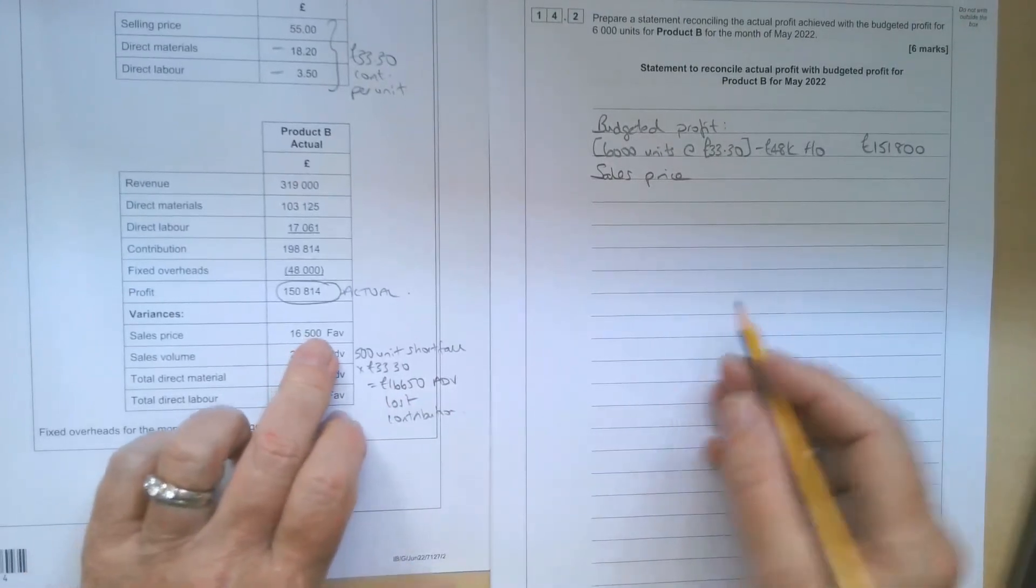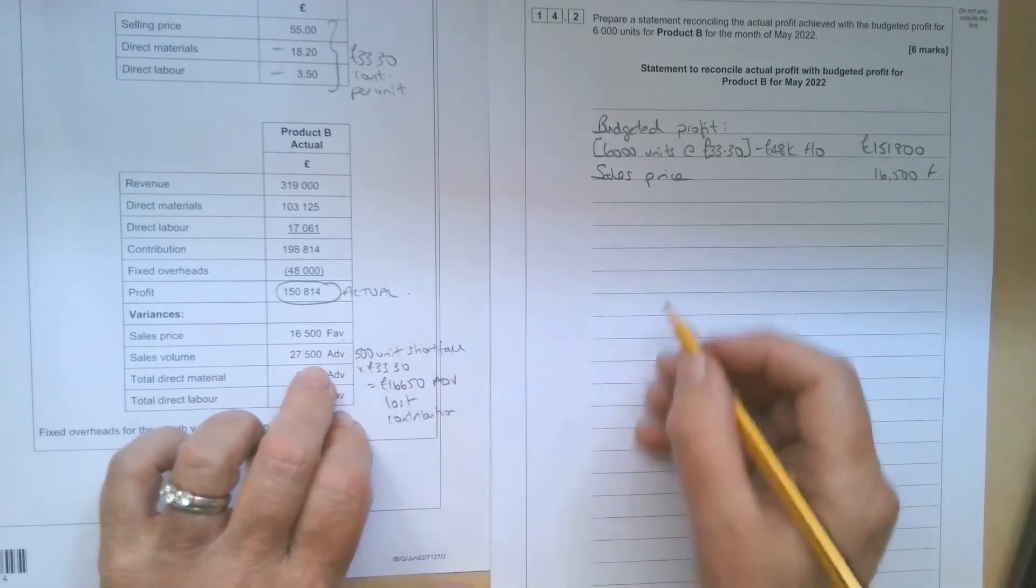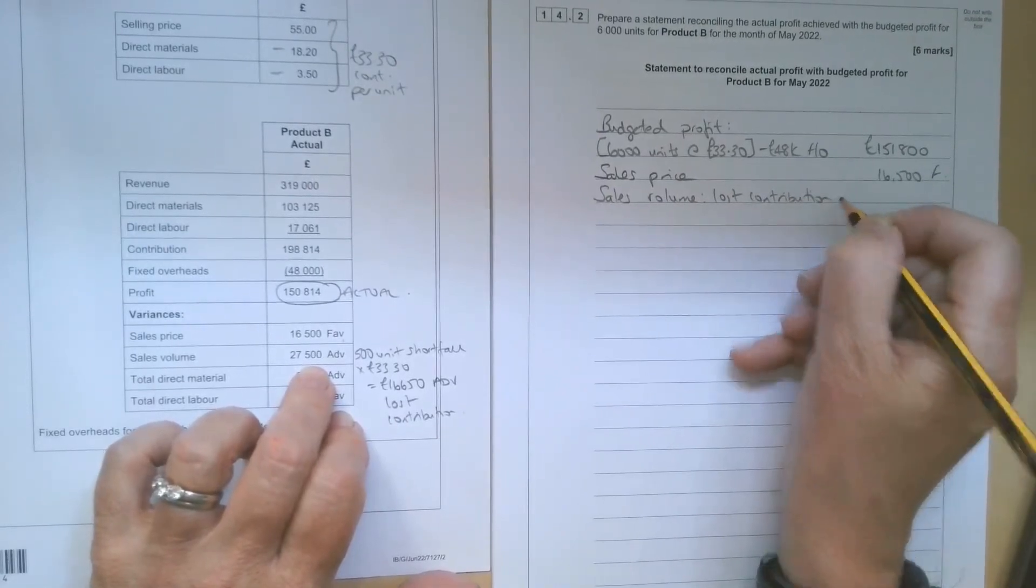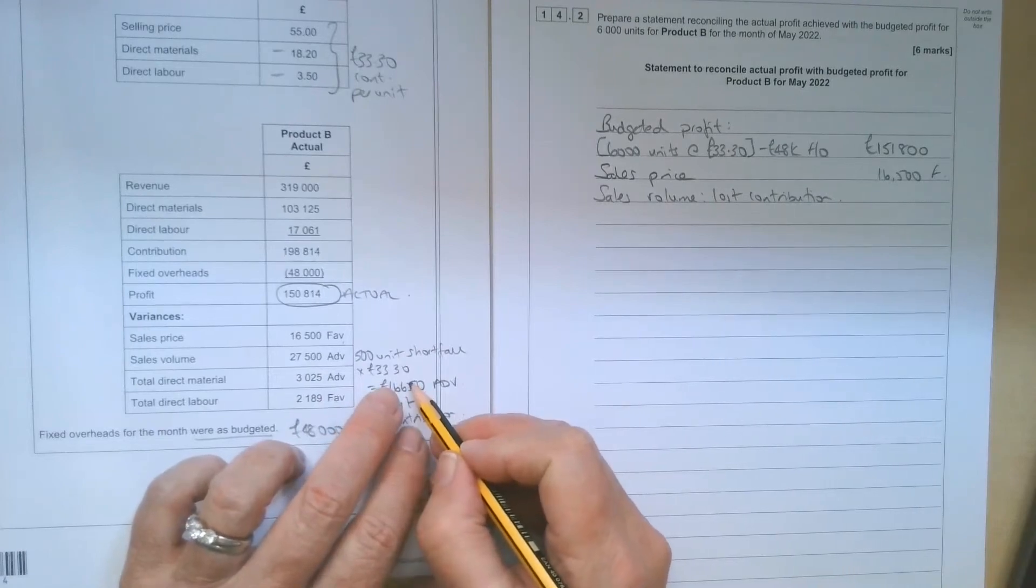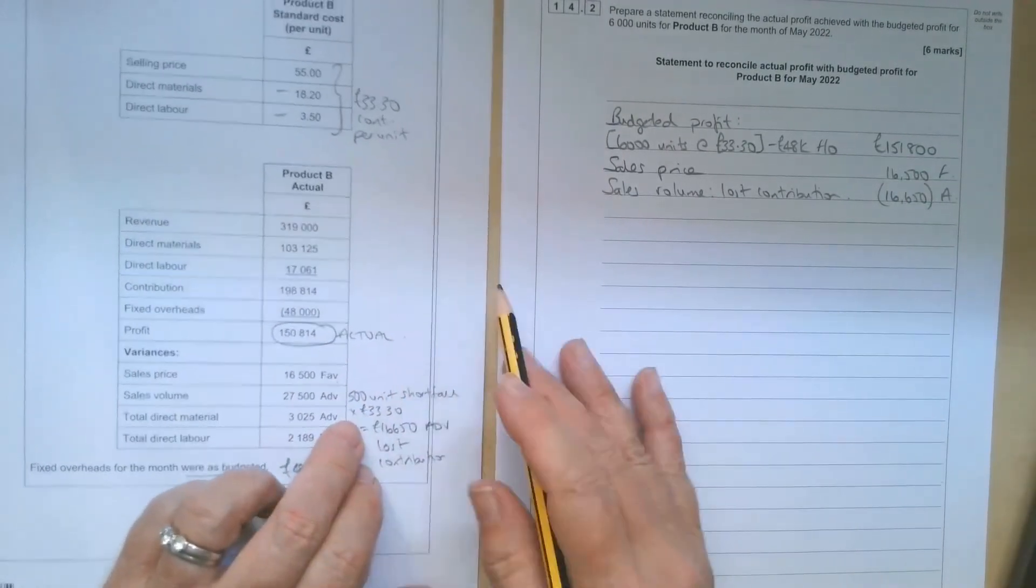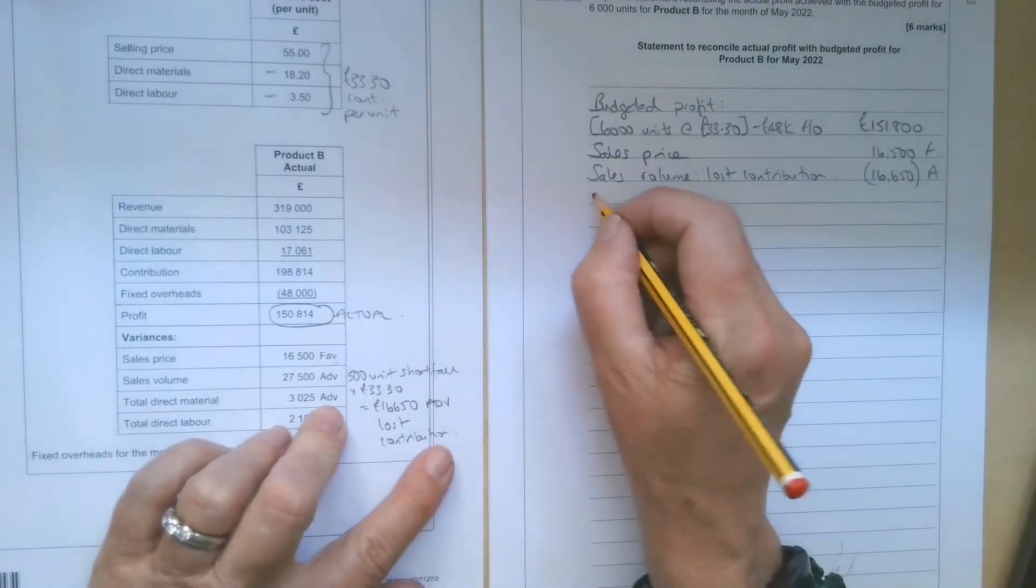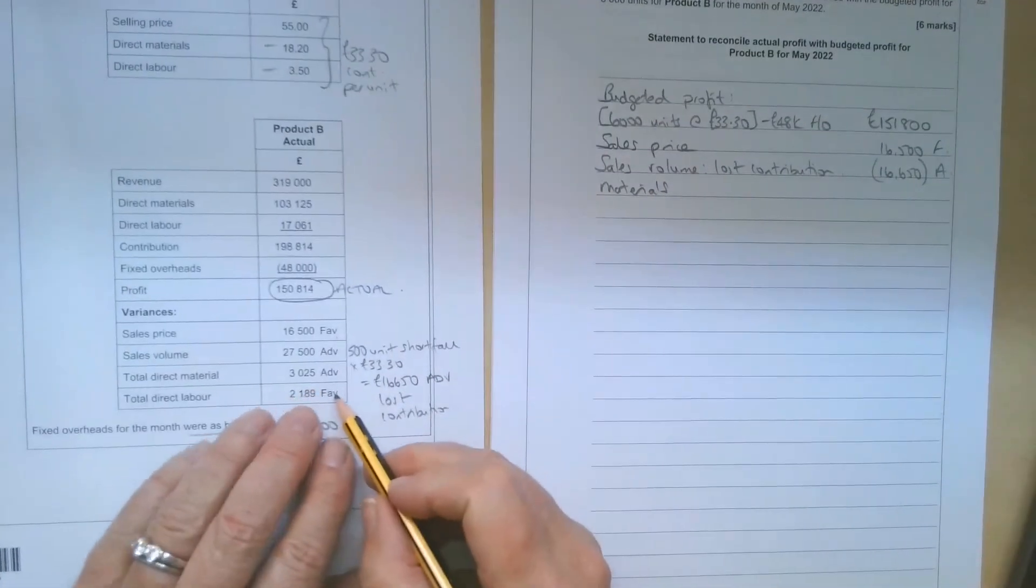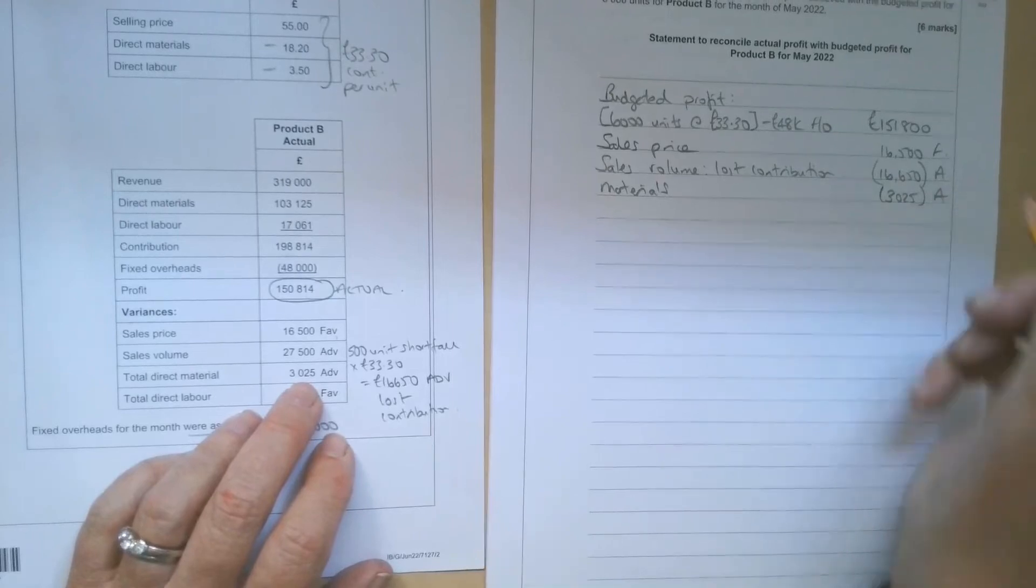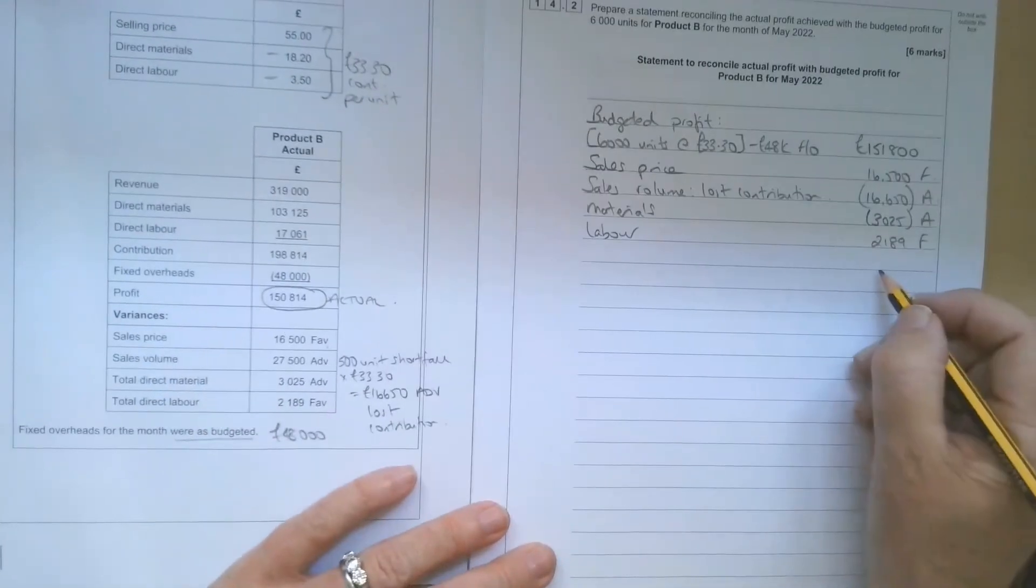So the sales price variance, that's fine, £16,500 favourable. So we'll be adding that to the profit because a favourable variance will increase profit. But remember the sales volume, we only want the lost contribution. So we don't want to stick the whole sales volume variance in. We just want 500 units times the lost contribution of £33.30, which is £16,650. I'm going to put that in brackets. It's an adverse variance. Because there's a shortfall, so whenever you make and sell fewer units than you planned, that's always going to be adverse. And an adverse variance will reduce profit. Then we can put the materials variance in. So the total materials variance is £3,025 adverse. That is going to reduce our profit. And then the labour variance was favourable by £2,189. So that will actually increase our profit.